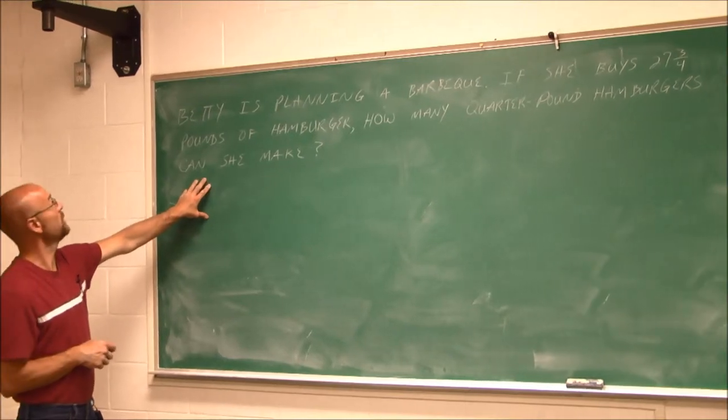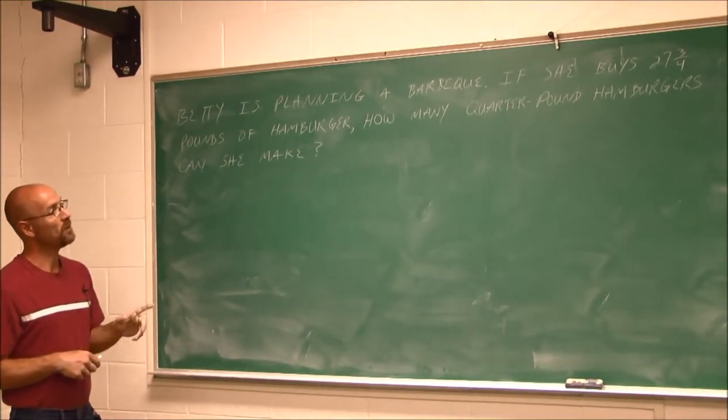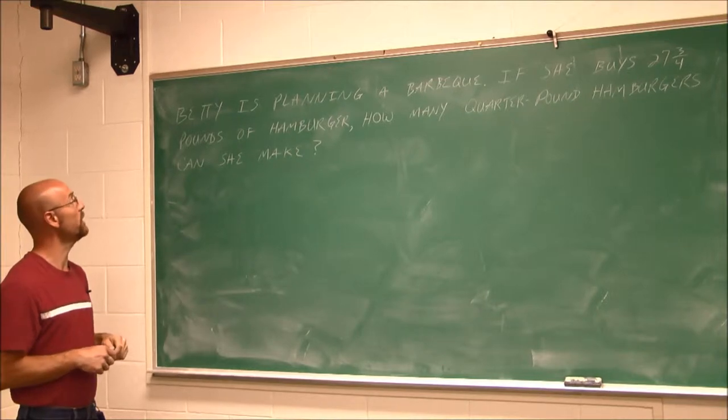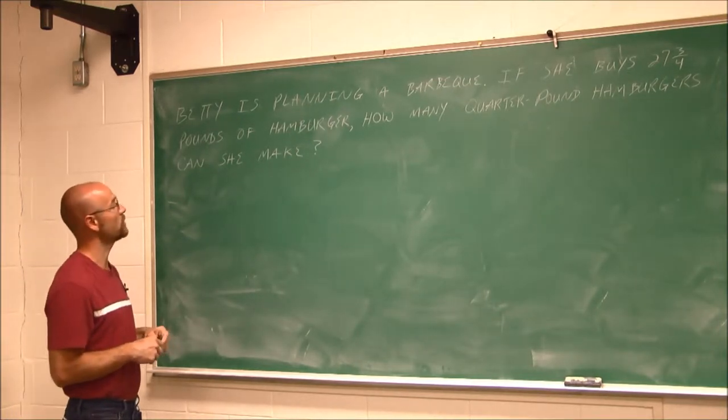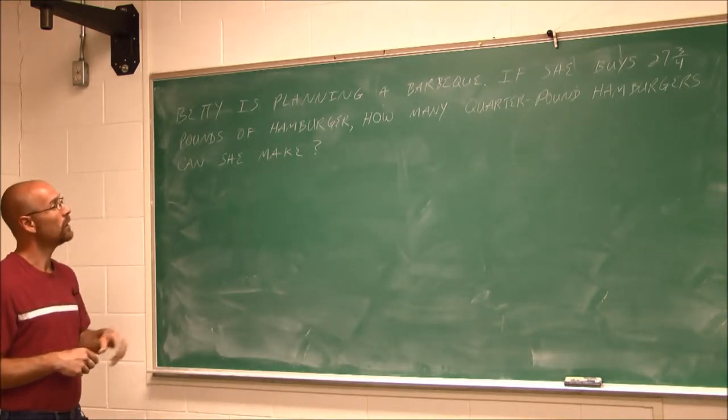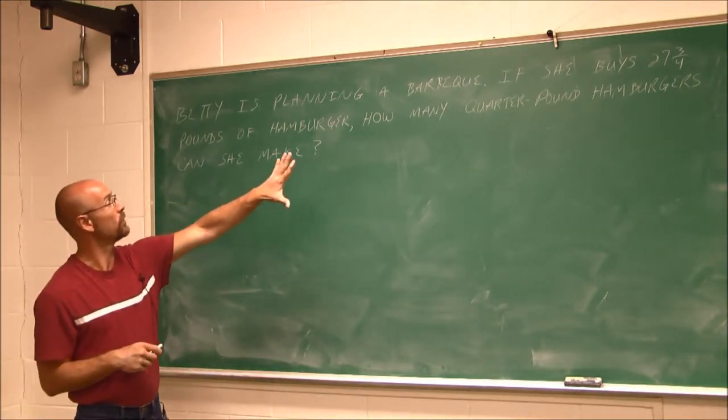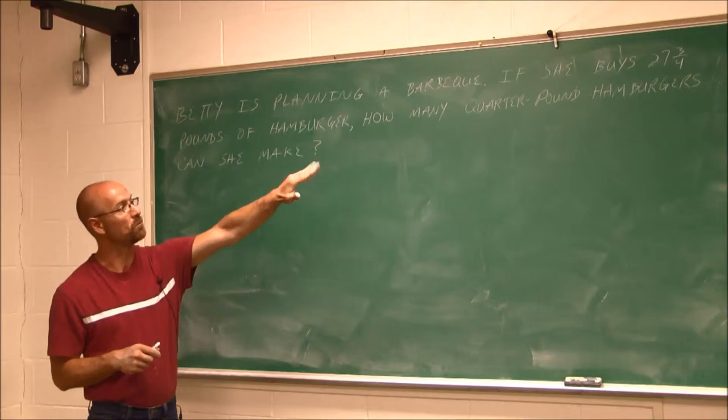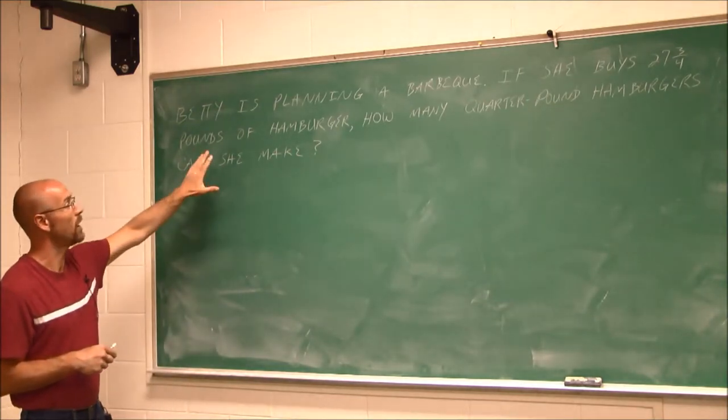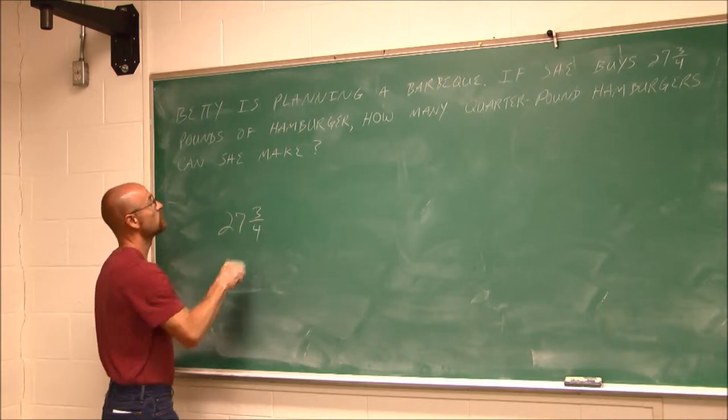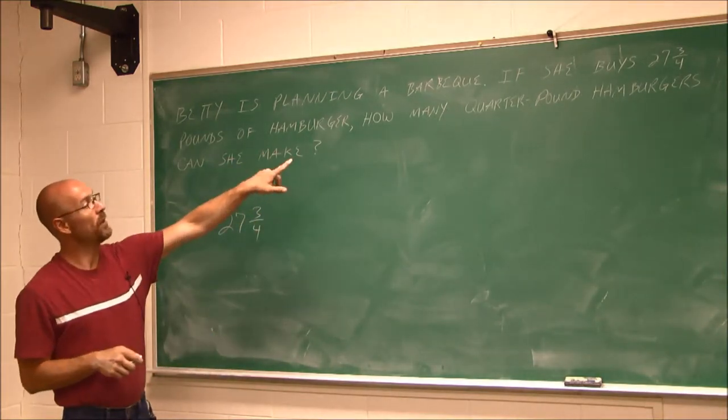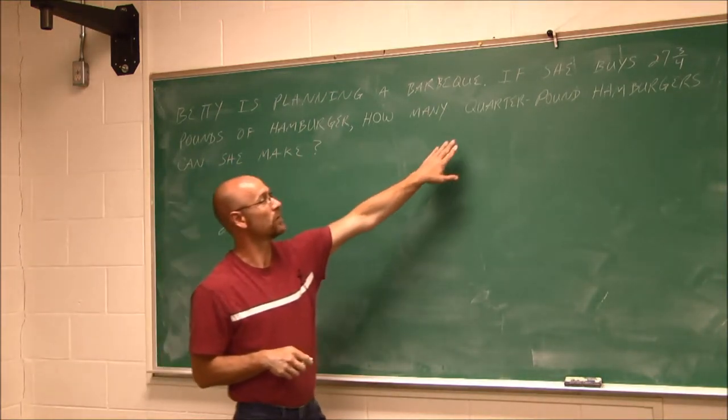This application says, Betty is planning a barbecue. If she buys 27 and 3/4 pounds of hamburger, how many quarter pound hamburgers can she make? Well, if we reread it, we see she's buying 27 and 3/4 pounds of hamburger. So that's given information. Let's write that down.